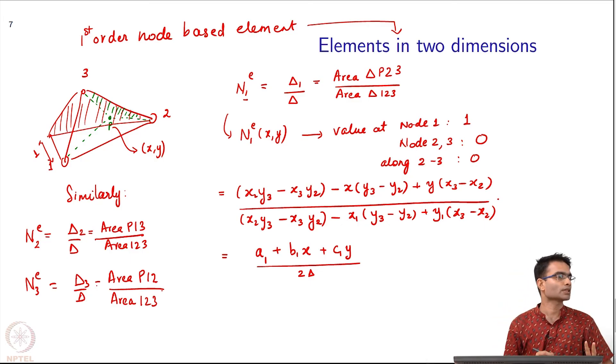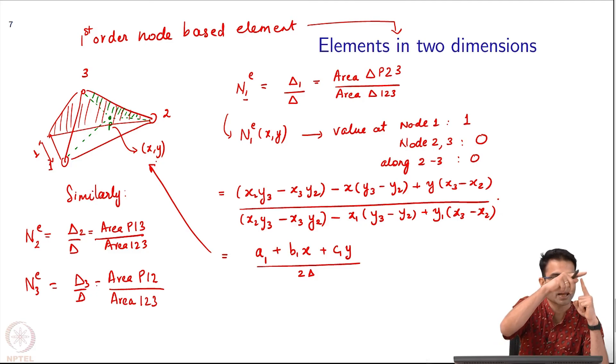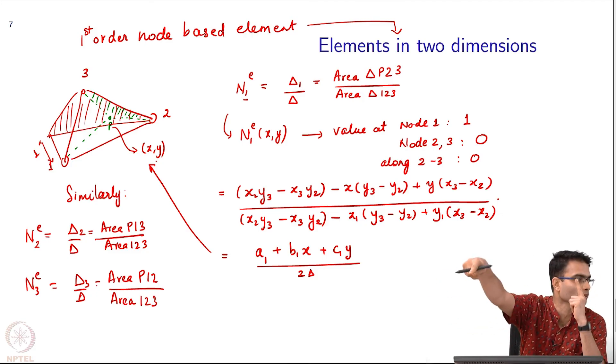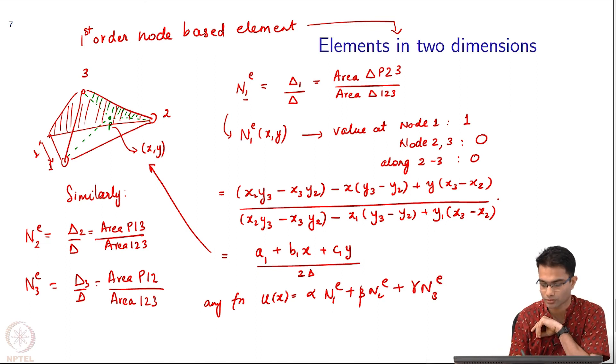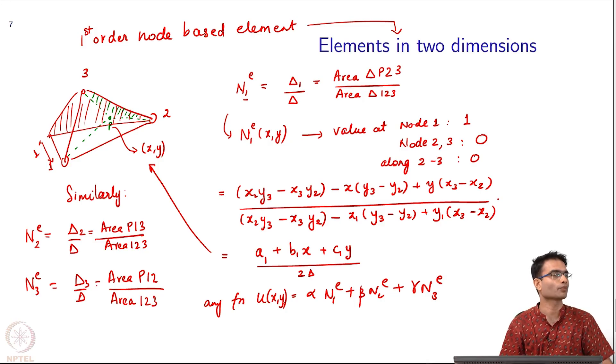Similarly, I can define my N2 as triangle 2 by triangle, which is area of P13 by area 123. And N3 is going to be similarly area of P21. All of these three shape functions are linear functions. What is the geometric picture? You all agree with this visualization - like a tent with height 1 at node 1 and 0 by the time it reaches node 2, 3 and the line connecting 2, 3. Now if I take any function u(x,y) equal to alpha*N1 plus beta*N2 plus gamma*N3, what is this going to look like? A plane, like a tent. The height of the tent at 1, 2, and 3 is alpha, beta, gamma. It is a plane suspended by these heights.